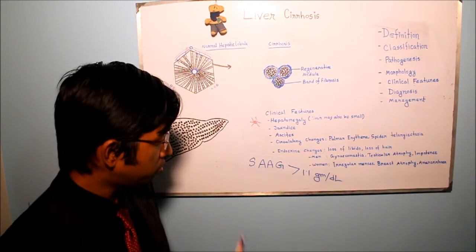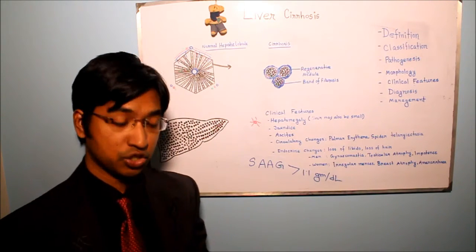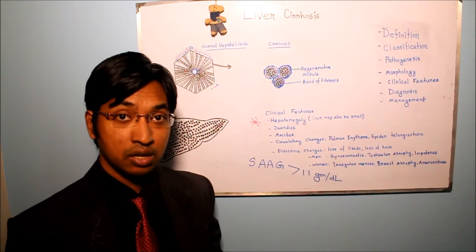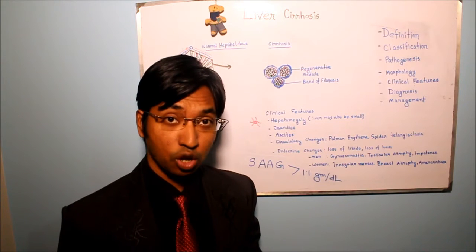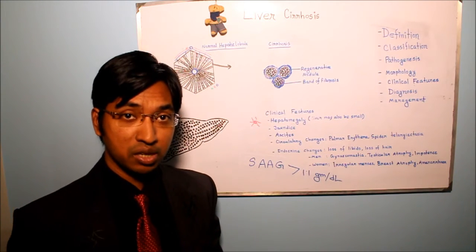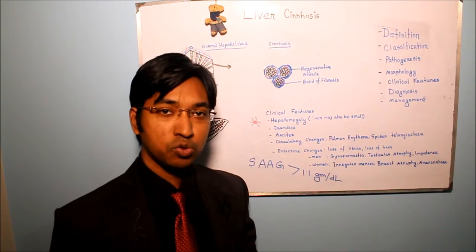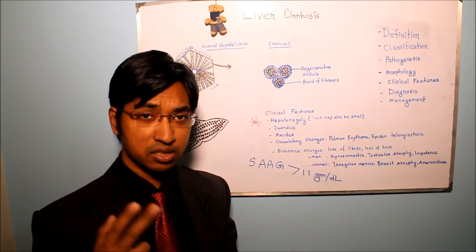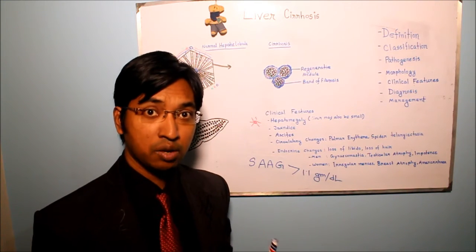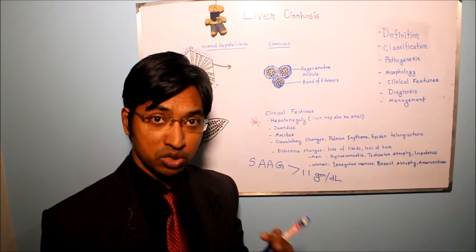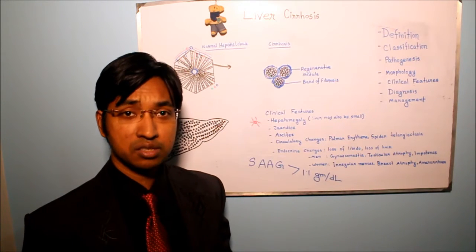If neutrophils are present in the ascites fluid, that may suggest infection. If blood is found in the ascites fluid, that may suggest disseminated intra-abdominal cancer. So that was in short about ascites. Now we will move on and talk about the second clinical consequence — development of portal systemic venous shunt.